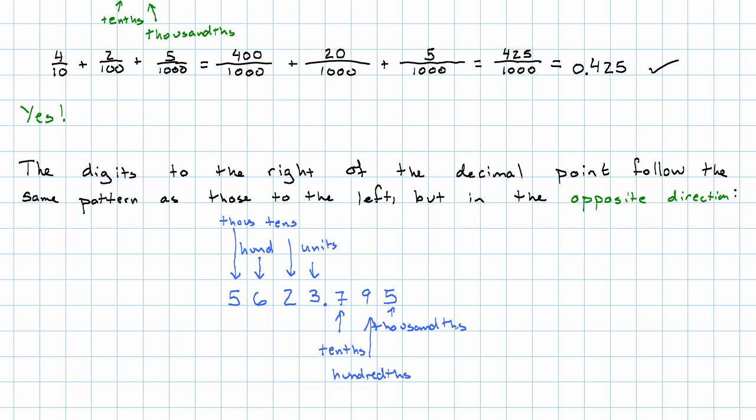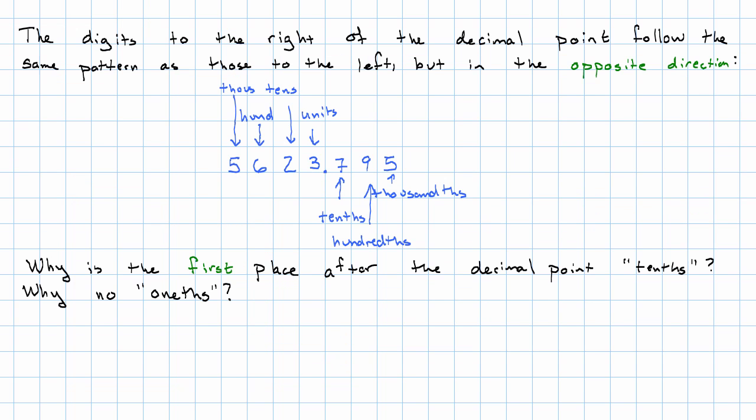Why no onths? Why is the first place after the decimal point tenths? And the answer to that is, well, there's already a name for denominator one. Denominator one, one-ths, is already in the units place. So we don't need another place to indicate that.